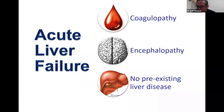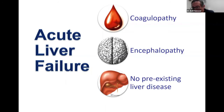Acute liver failure is defined as coagulopathy with INR greater than 1.5 in the presence of hepatic encephalopathy in someone with no pre-existing liver disease. It's very important to understand that concept, because patients who had underlying cirrhosis and came in with hepatic encephalopathy have acute-on-chronic liver failure — we need to differentiate that from acute liver failure.